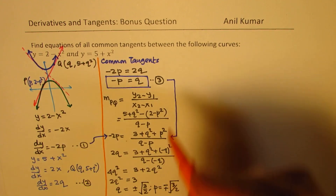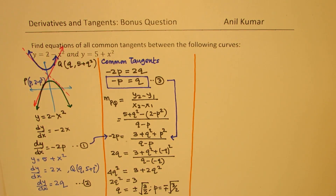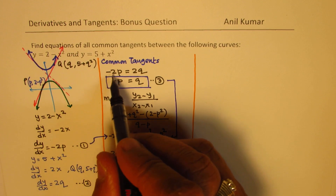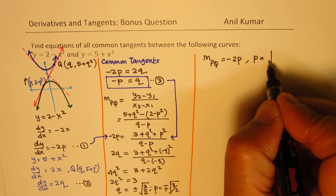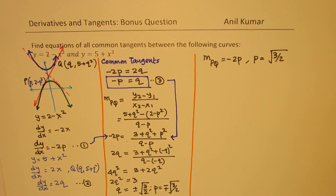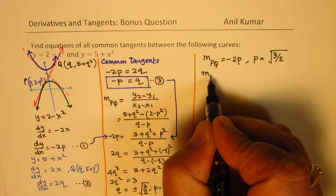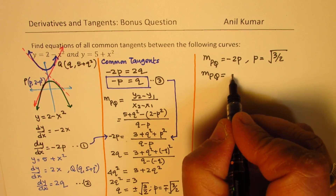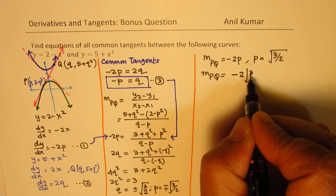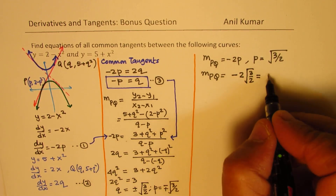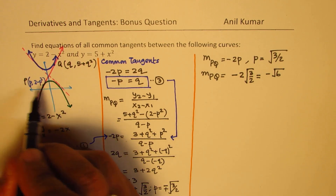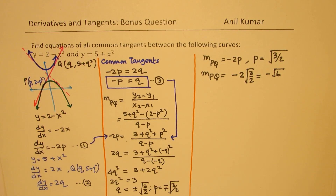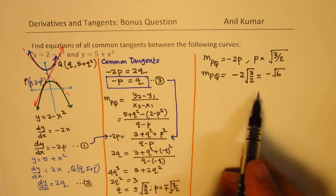So we have found the values of the points. We know slope equals minus 2p, and p could be square root of 3 over 2. Taking the positive value, slope of line PQ equals minus 2 times square root of 3 over 2, which gives negative square root of 6. The corresponding point P has x equals square root of 3 over 2, and y equals 2 minus 3 over 2, which simplifies to one half.